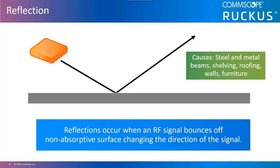Much like when a tennis ball is thrown against a brick wall, microwave reflection is a concern for both indoor and outdoor wireless LAN environments. In an outdoor environment, microwaves reflect off large objects and smooth surfaces such as buildings, roads, bodies of water, and even the earth's surface.